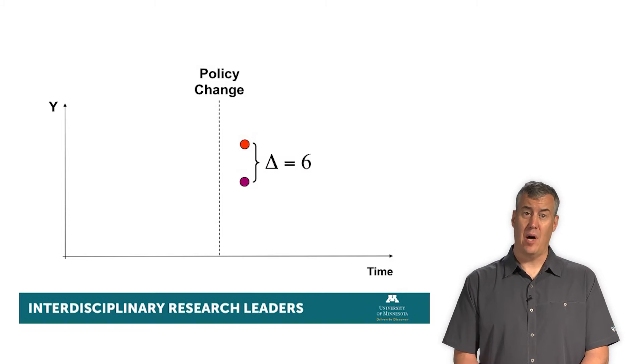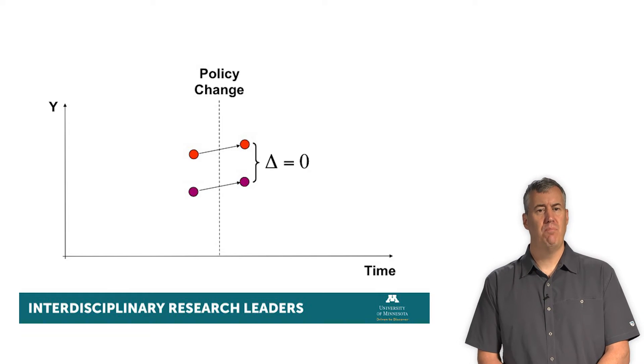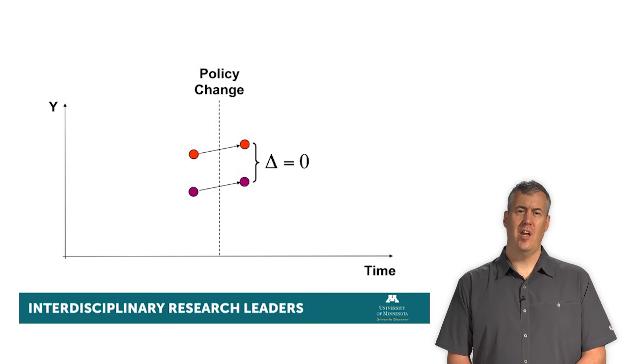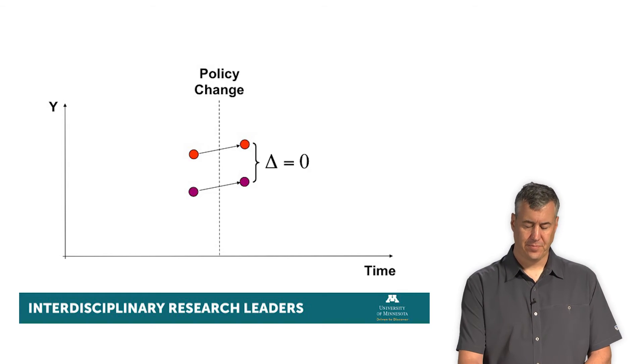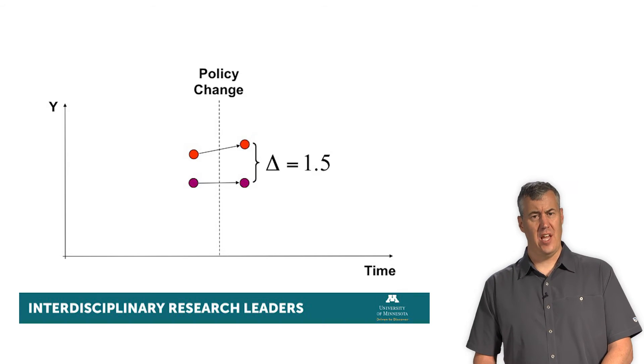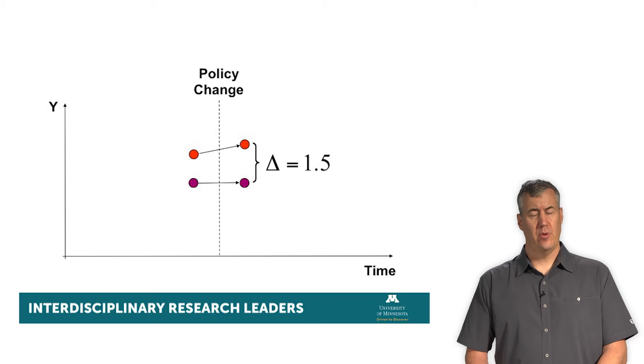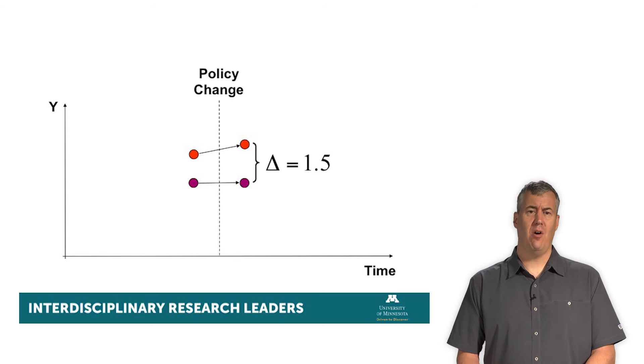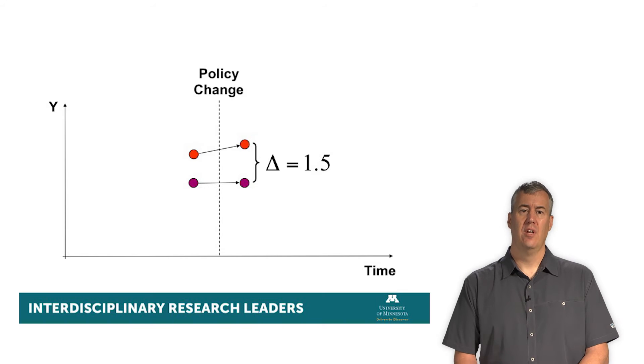In this graph, it looks like the policy change changed the orange and the purple group to have a difference. But what if this was the case? What if both groups were actually rising anyway, despite the intervention? So here we'd say there's no difference because they both went up the same amount. So they started out in different places, both went up a couple of units, and we subtract that out, and there's no difference between them. In this case, the purple group stayed the same, the orange group went up a little bit, and so the orange group went up 1.5 units. The change or the delta is 1.5. We might credibly say the policy had an impact of 1.5 health units on the orange group relative to the purple group.